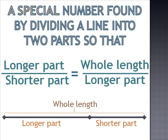The golden ratio is a special number found by dividing a line into two parts so that the longer part to the shorter part is equivalent to the whole length to the longer part, as shown in the visual below.